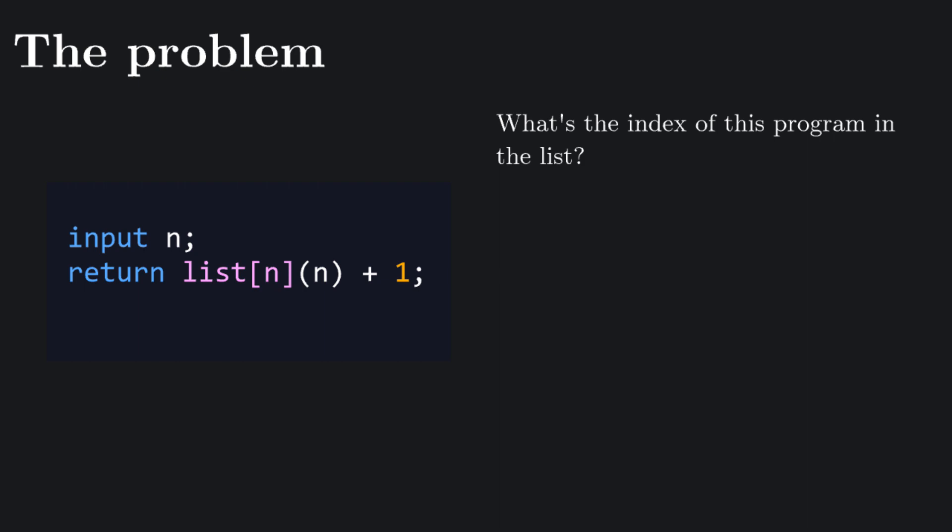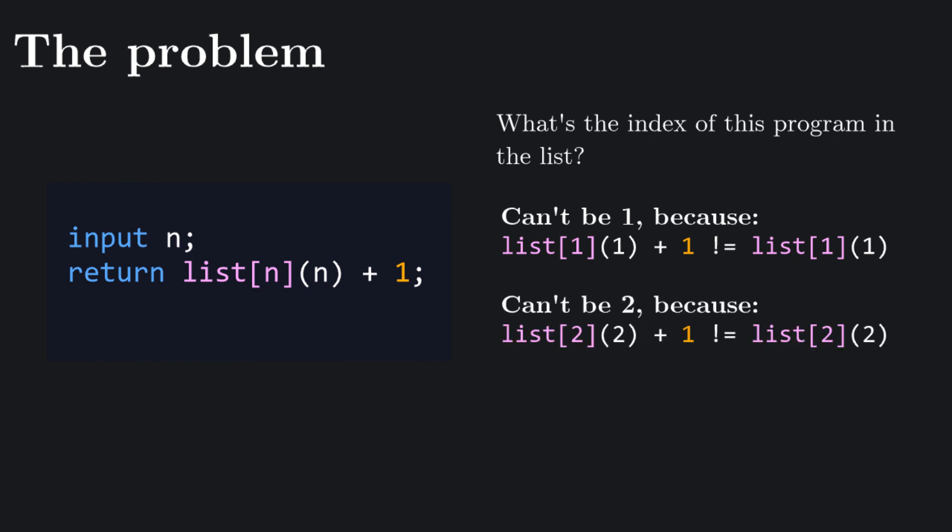But wait, there's a problem. This new program cannot be the first of the list, because when called on 1, it returns one more than the first program of the list. It can't be the second, because when called on 2, it returns one more than the second program of the list. In general, it cannot be an element of the list, because it always returns one more than it should.